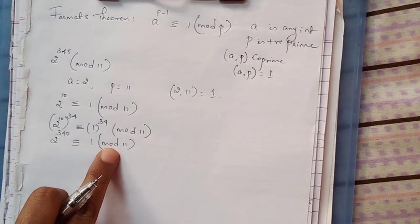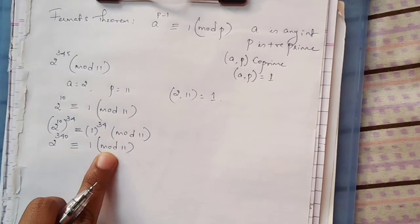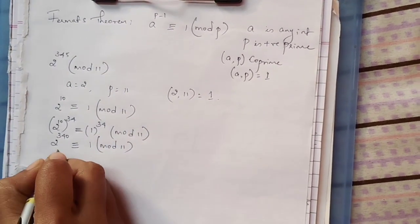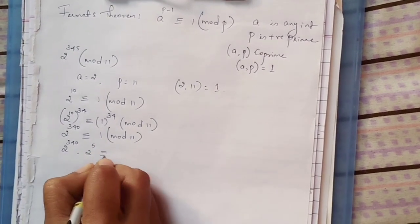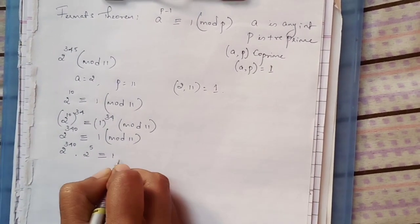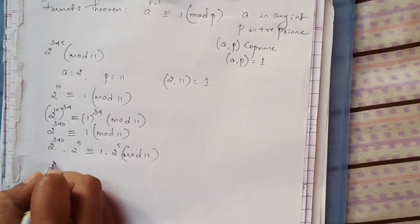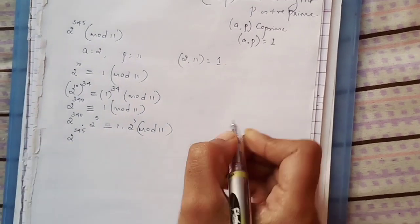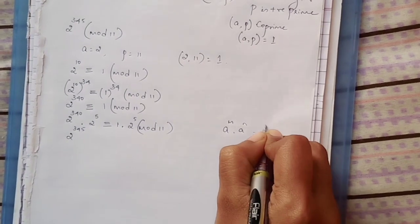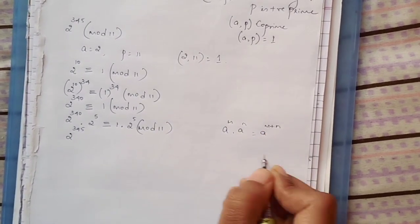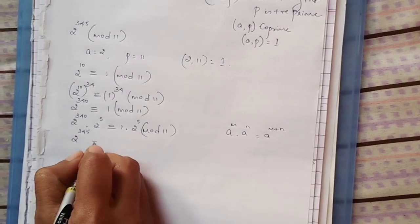We have 2 to the power 340 congruent to 1 mod 11, but for the question we require 2 to the power 345. So we have to multiply 2 to the power 340 by 2 to the power 5. Since we have multiplied on the left-hand side, we have to multiply on the right-hand side also. We know that a to the power m times a to the power n equals a to the power (m plus n) when bases are the same. You can add the powers.